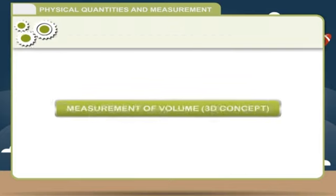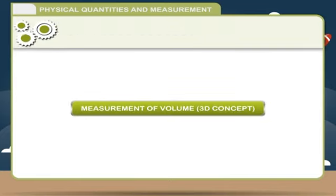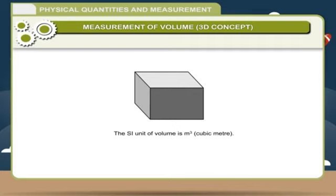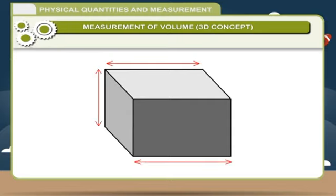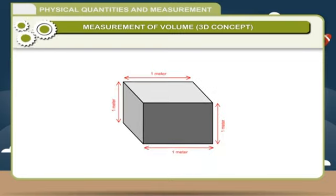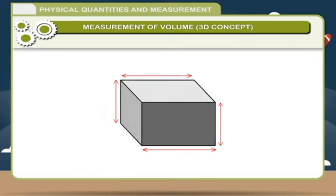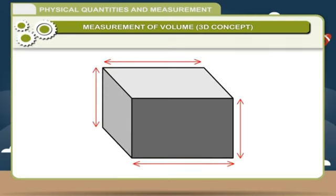Volume of an object is the space occupied by it. The SI unit of volume is cubic meter. One cubic meter is the volume occupied by a cube whose each side is equal to 1 meter. Other smaller units include cubic centimeter and cubic decimeter. One cubic centimeter is the volume occupied by a cube whose side is equal to 1 centimeter.